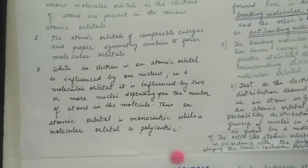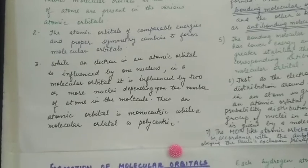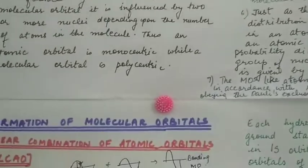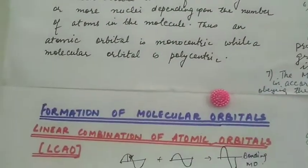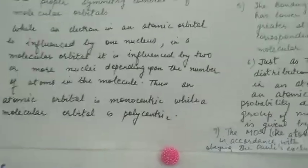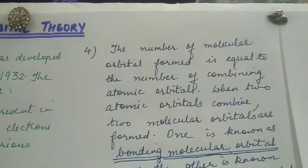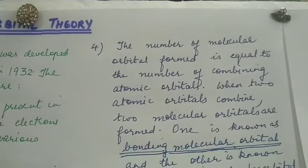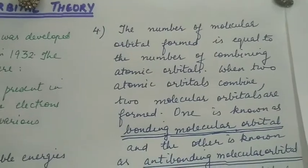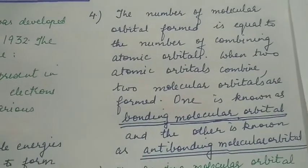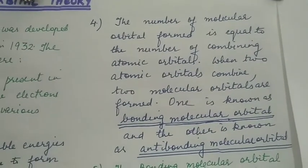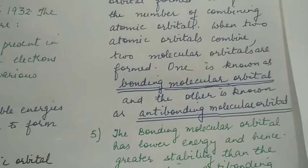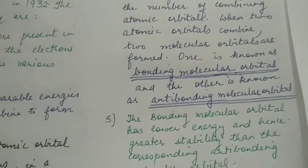Thus an atomic orbital is monocentric while a molecular orbital is polycentric. The number of molecular orbitals formed is equal to the number of combining atomic orbitals. When two atomic orbitals combine, two molecular orbitals are formed.